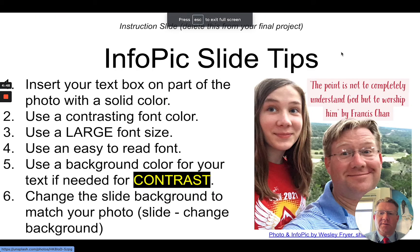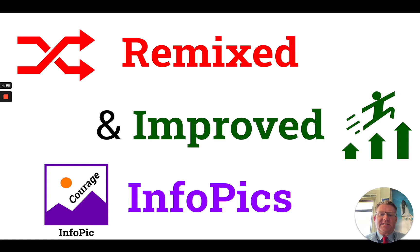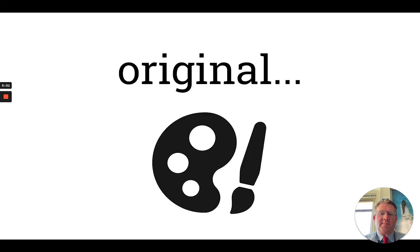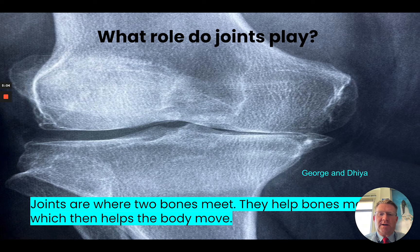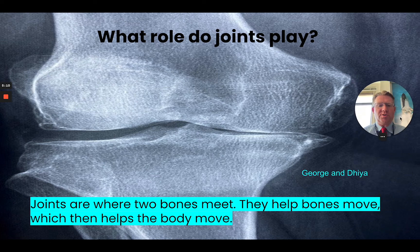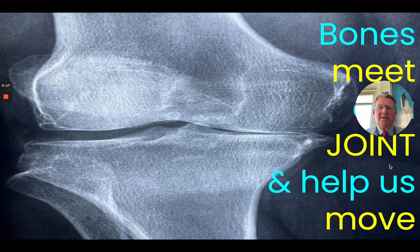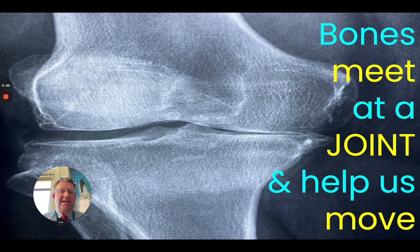Have a font that's easy to read. Use a background color or a highlight color, and you could change the slide background to match your picture if you want to. Let me show you an example of a fixed InfoPic and how I fixed it and why. Here's the original — this was made by some fifth graders last year. It talks about joints: 'Joints are where two bones meet. They help bones move, which helps the body move.' And this isn't terrible. But let's take a look at an updated, remixed version: 'Bones meet at a joint and help us move.' See how that is much shorter? There's less text, it summarizes the key idea, still has a big image, but it's much more concise and communicates the idea quicker.